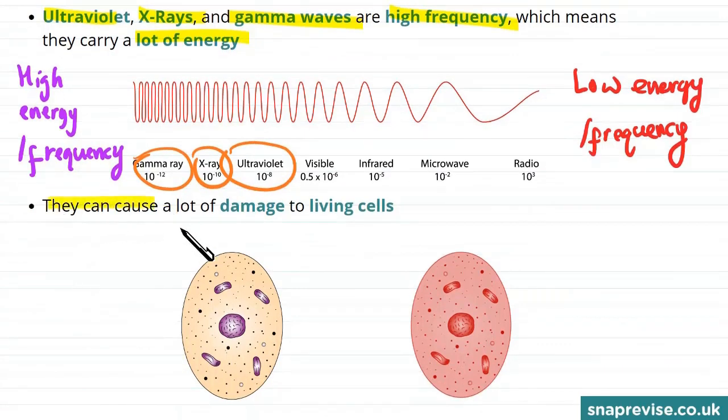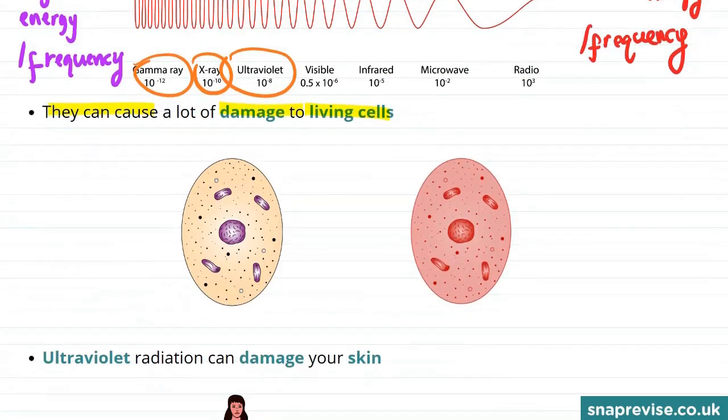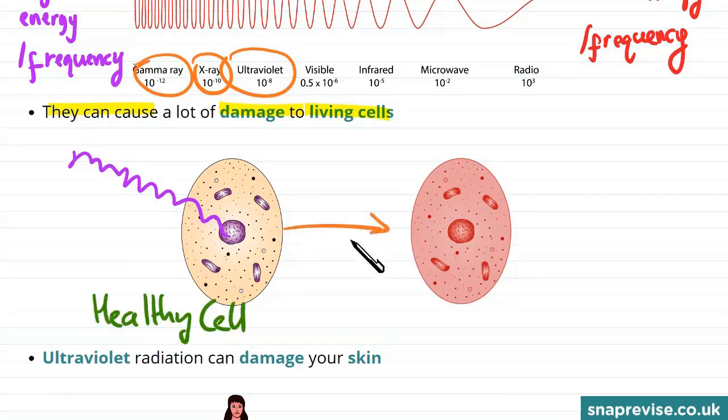These high frequency waves are able to cause a lot of damage to living cells. So we've got this high frequency wave that comes in and it collides with a cell. And this process can take a healthy cell and turn it into a damaged cell. So here's our sadly damaged cell.